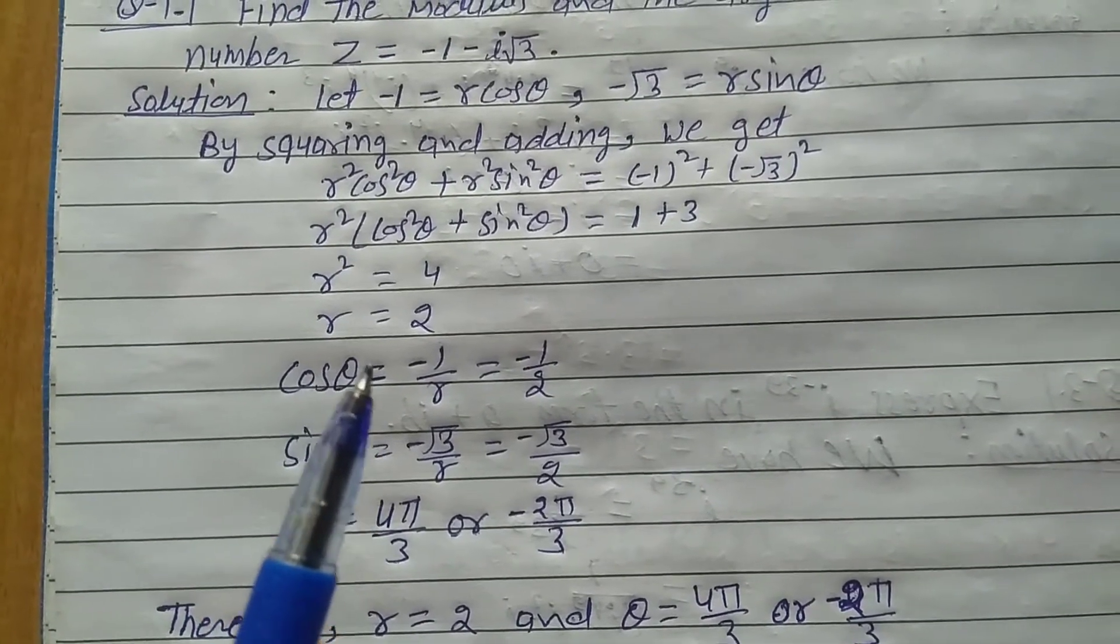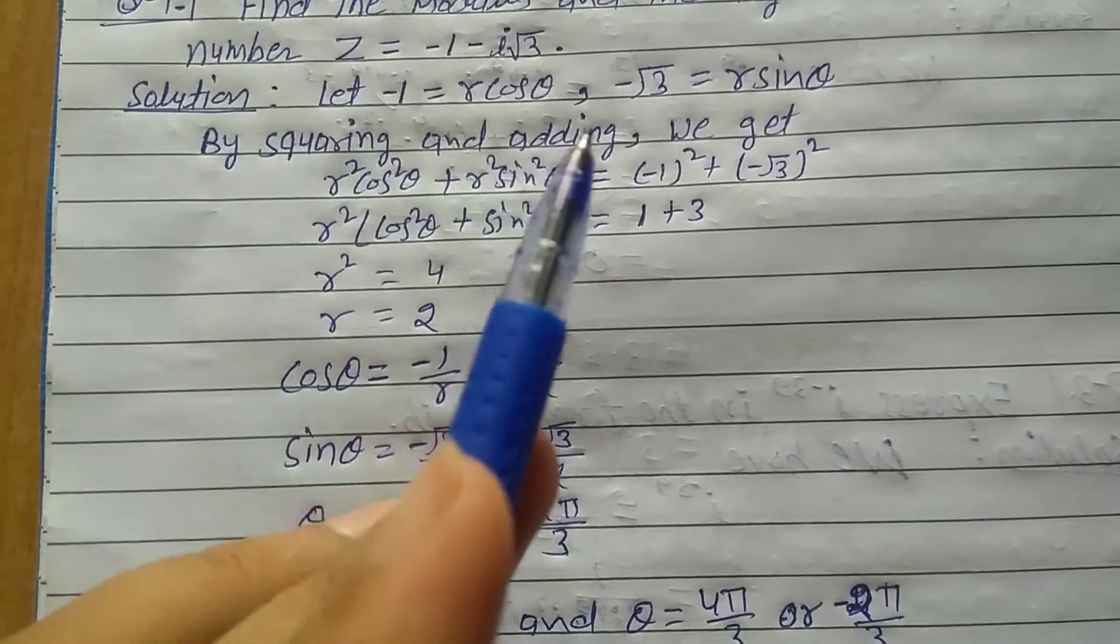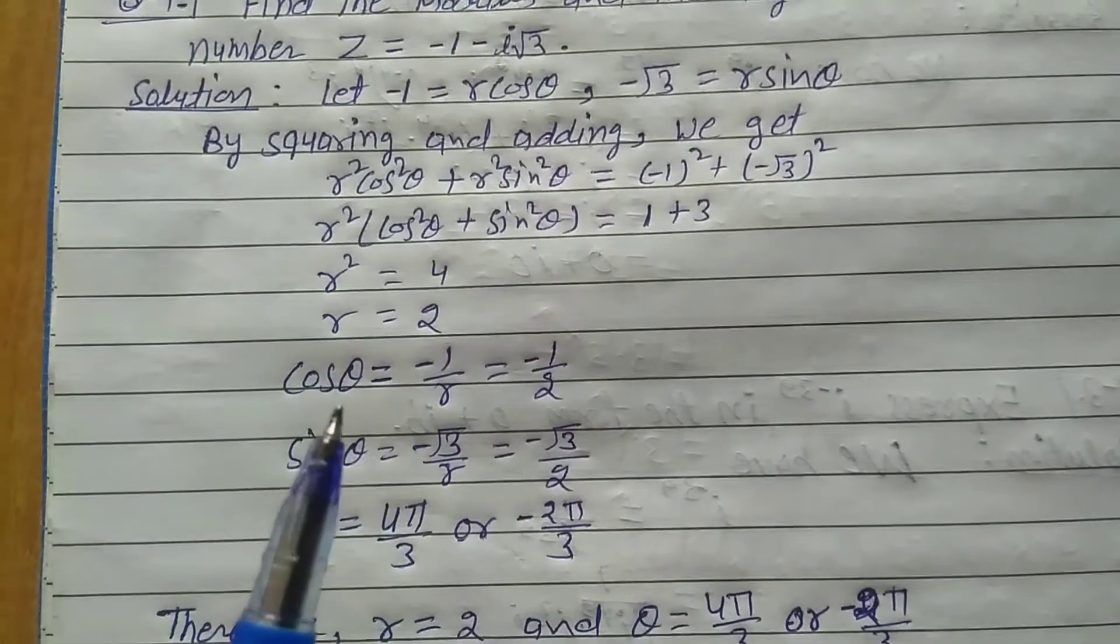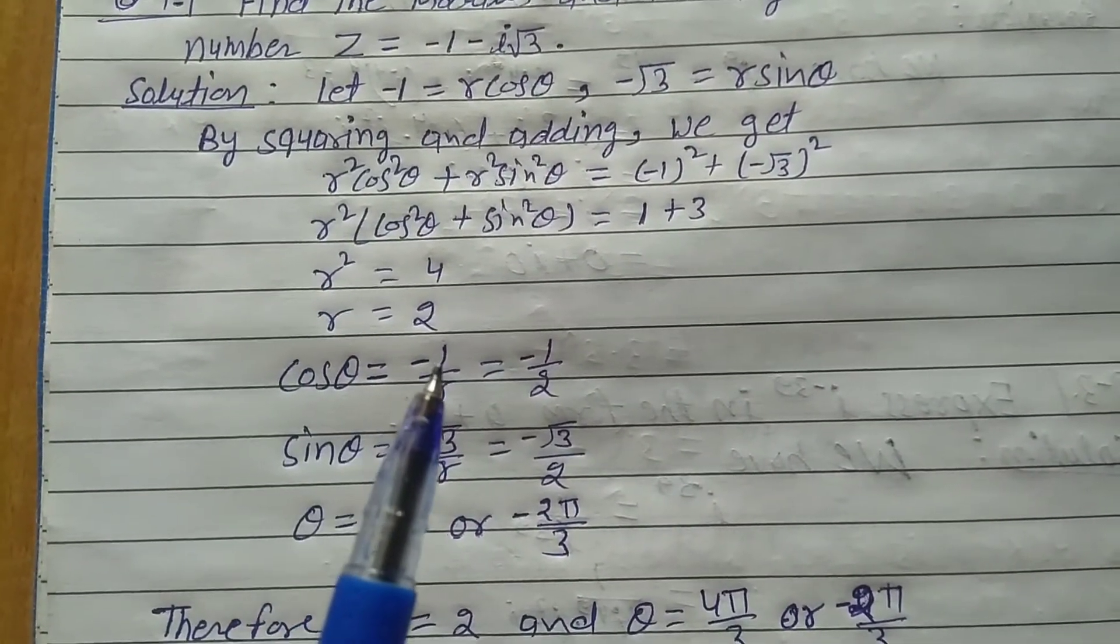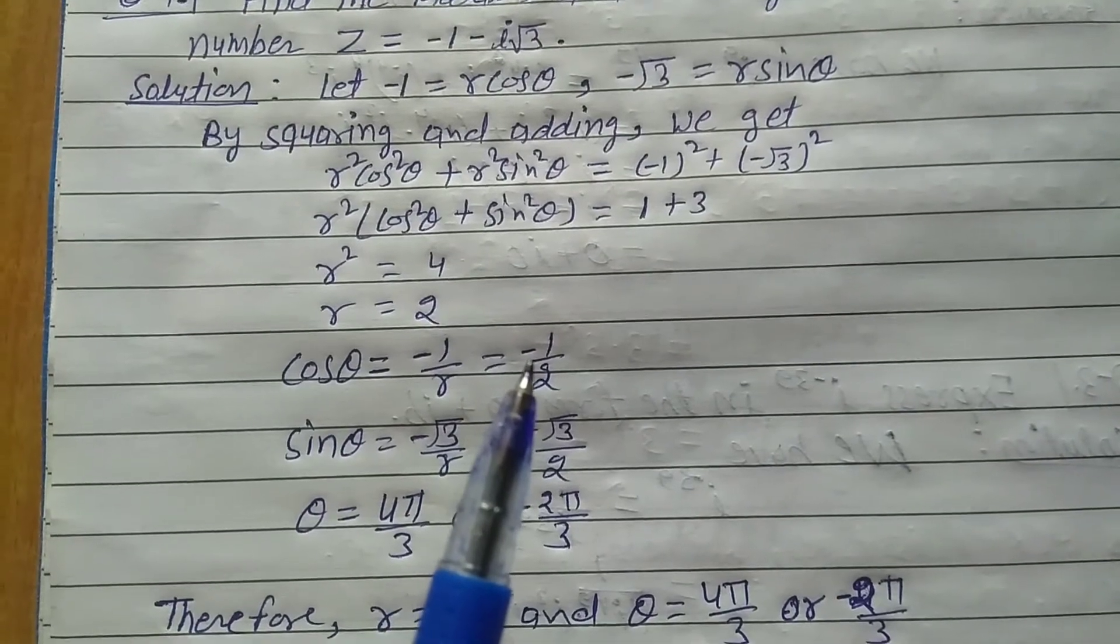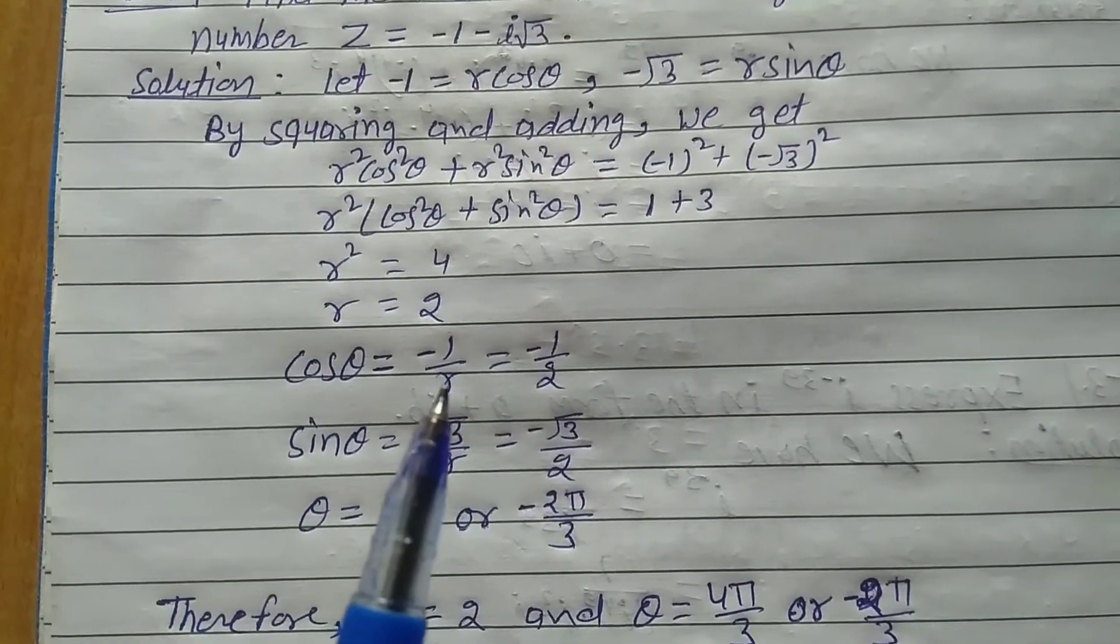Now we'll find cos θ by putting r into the equation. Cos θ = -1/r = -1/2, because the value of r is 2.